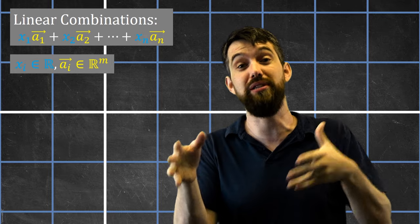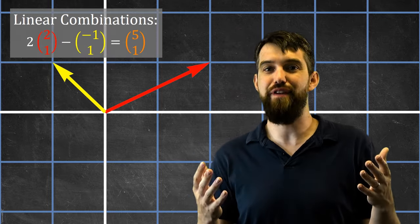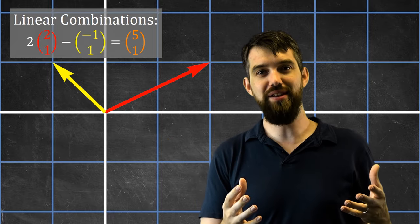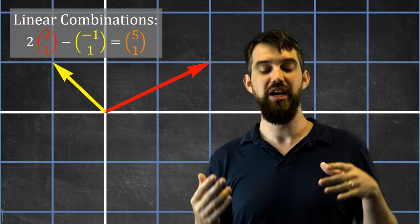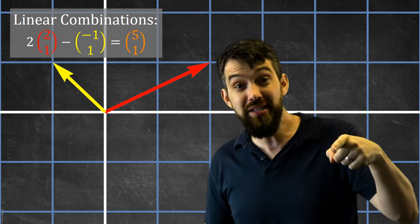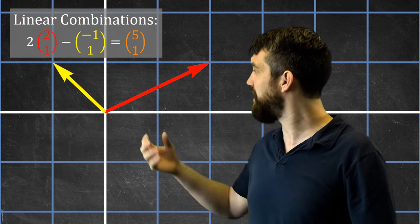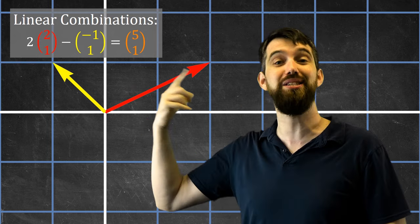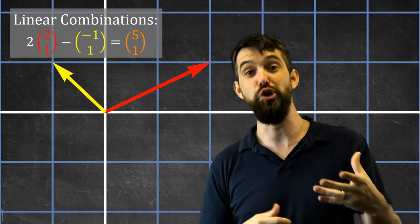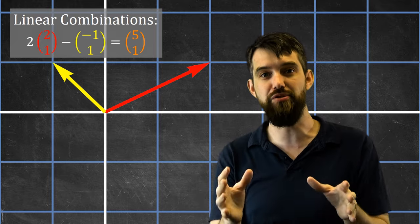If I begin with two standard vectors like (2,1) and (-1,1), I can take an arbitrary linear combination: 2 times the red vector (2,1) and minus 1 times the yellow vector (-1,1). Doing the arithmetic: 2 times 2 is 4, minus a minus 1 is 5, giving a first component of 5, and then 2 minus 1 is 1, so I get the vector (5,1).